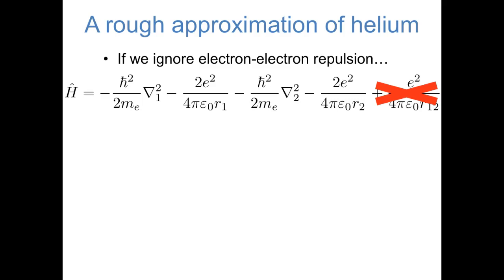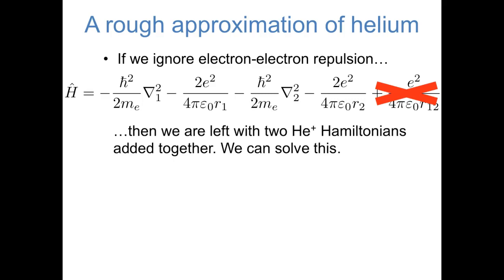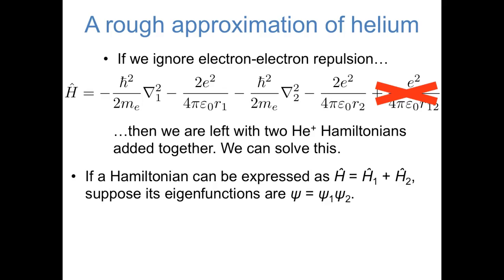Obviously this is going to make a big change in the energies that we calculate, but at least it's a place to start. If we ignore this electron-electron repulsion term, notice that the Hamiltonian operator now looks like the sum of two separate Hamiltonian operators for helium plus. The first two terms represent the kinetic and potential energy of the first electron with the nucleus, and the last two terms represent the kinetic and potential energy of the second electron with the nucleus — it's basically just the sum of two helium-plus Hamiltonians. And it turns out that's a problem we can solve exactly. We suppose that the eigenfunctions of this full Hamiltonian are products of the eigenfunctions of the two separate Hamiltonians — in other words, that the orbitals of helium as we're approximating it are products of the orbitals of two separate helium-plus cations.